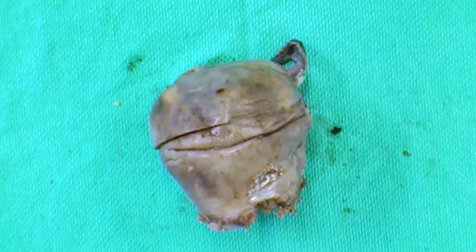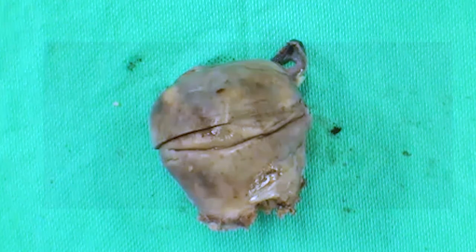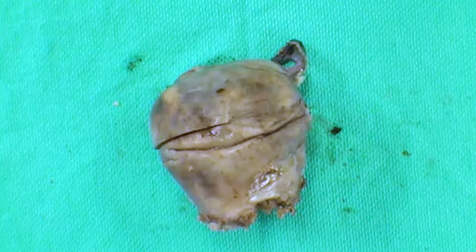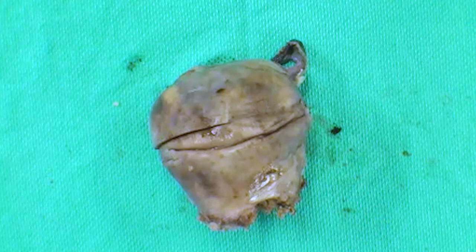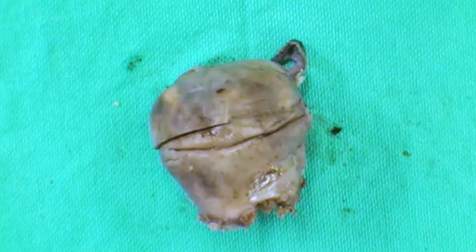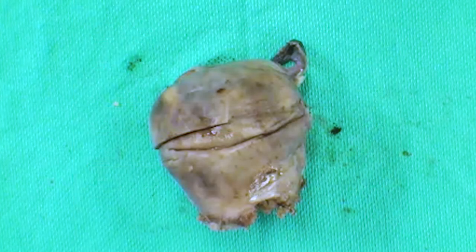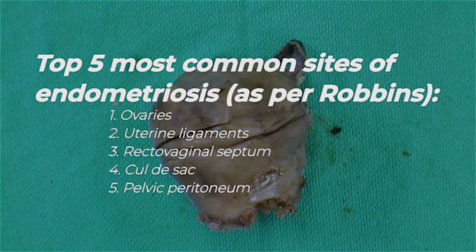Last but not least, we've talked about adenomyosis's cousin — endometriosis — which involves endometrial glands being extra-uterine. What is the most common site of involvement by endometriosis? This is in Robbins, often ranked in exam questions. Ovaries are number one by far. Uterine ligaments come next, then the rectovaginal pouch or cul-de-sac, and surprisingly the fallopian tube is actually lower on the list.